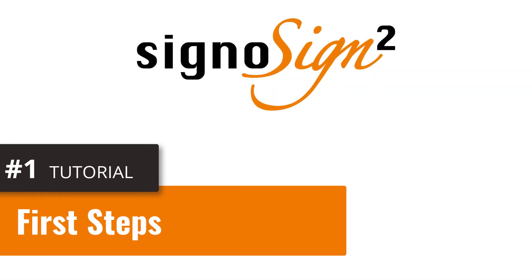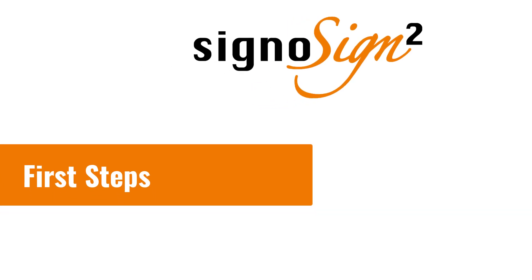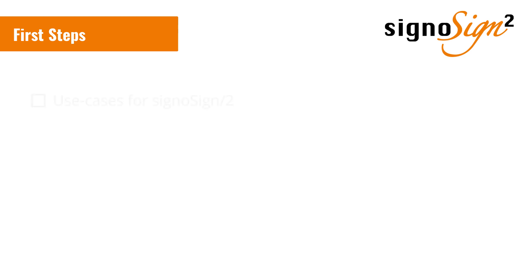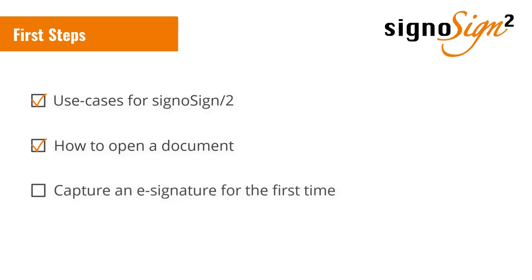Hello and welcome to the video series of the software CygnusSign 2. In this first video, we will give you some general information and show you the first steps. You will be able to learn more about the use cases of the software, the different ways to open a document, and we're going to capture a first signature for a document. The video description allows you to jump directly to a chapter of this tutorial at any time.